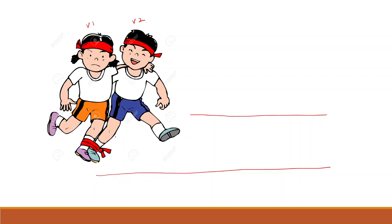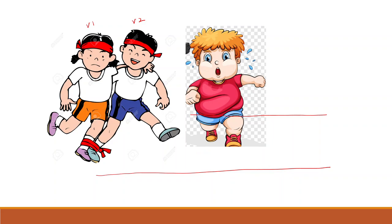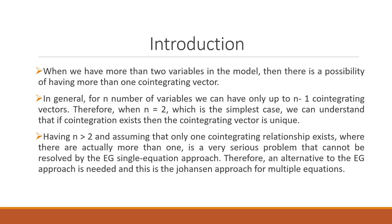Now, if there are more than two children, how many bands do you require? You require two bands. So the number of co-integration vectors are two. When we are having more than two variables, there is a possibility of having more than one co-integrating vector. In general, for n number of variables, we can have up to n minus one co-integrating vectors.